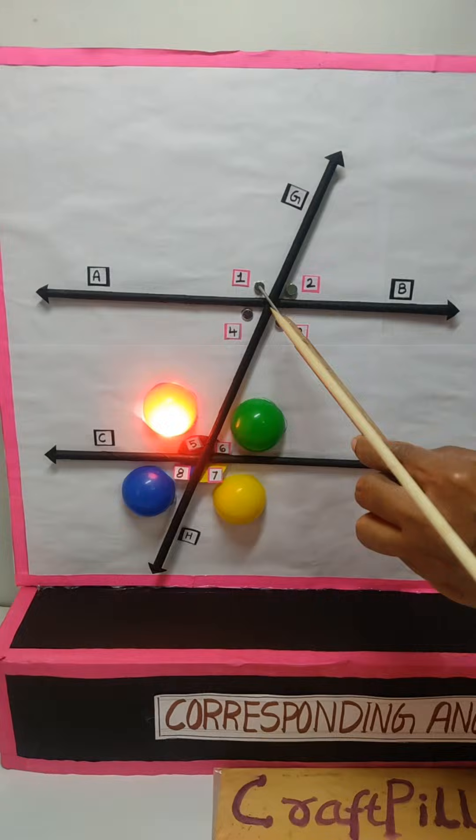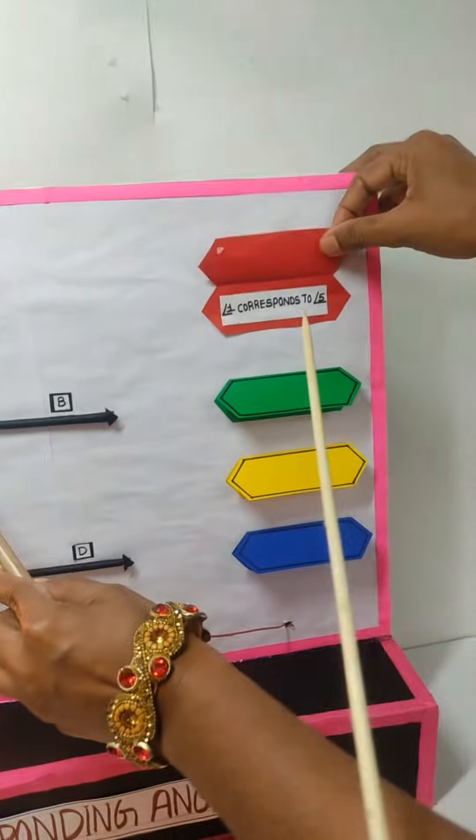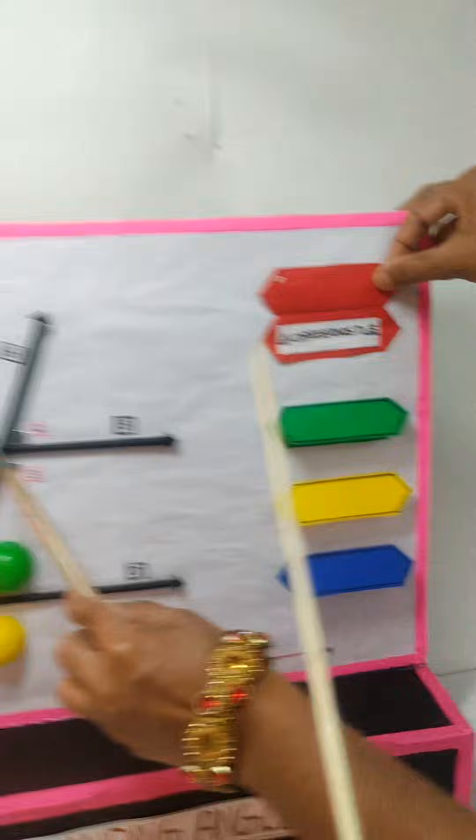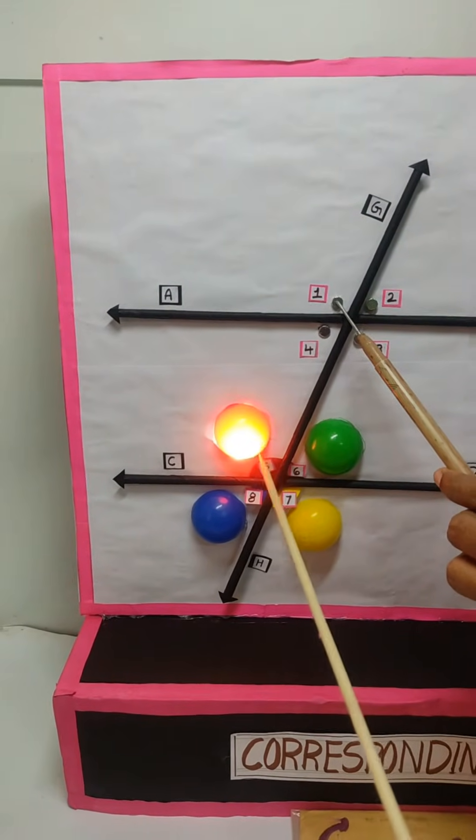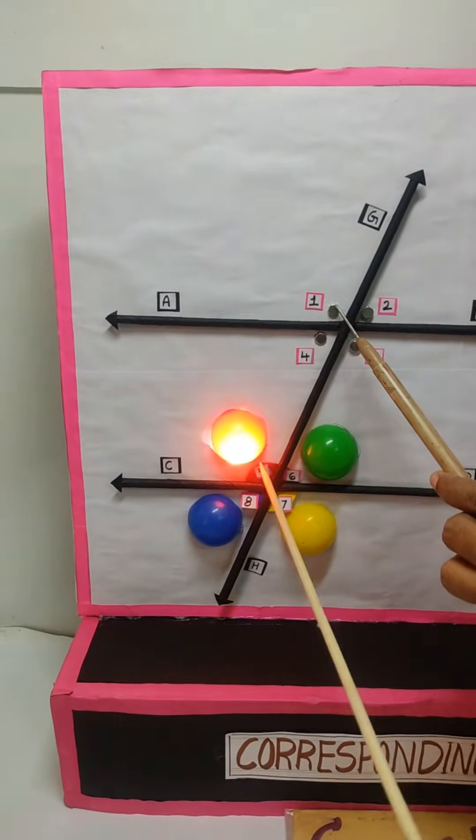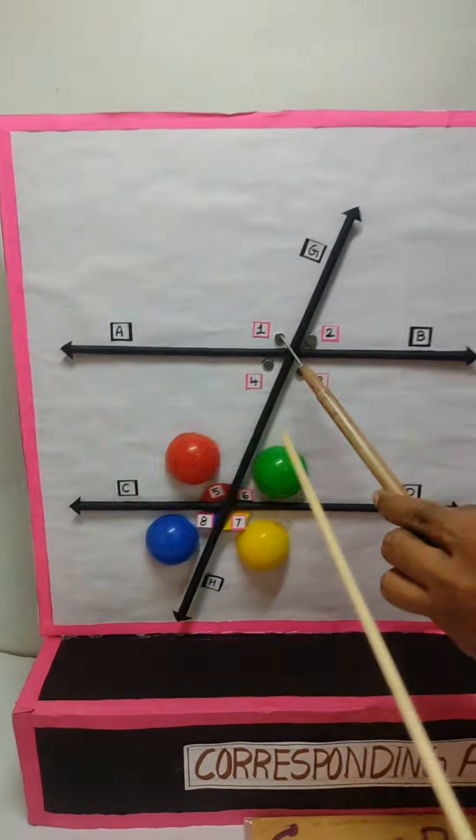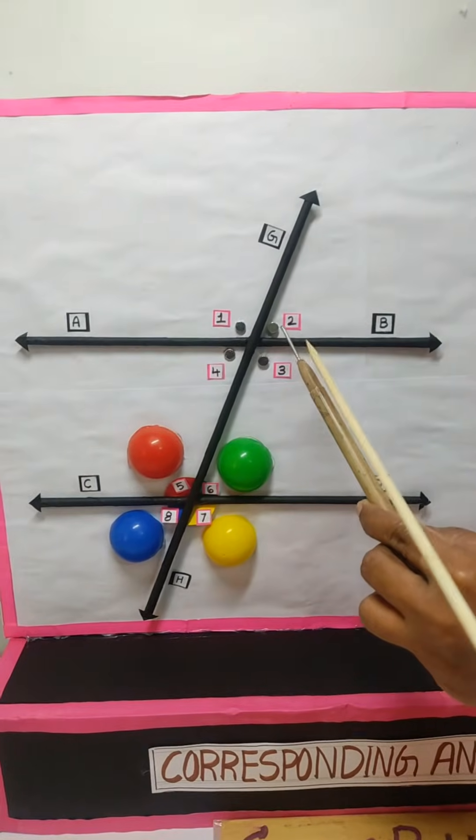Now we attach the angle one. That means this angle one is corresponding to angle five. Hence when we touch here, the light of angle five is glowing. That means this and this both are the same.